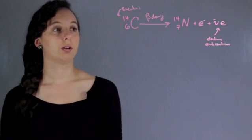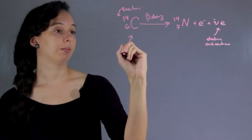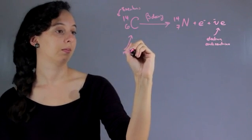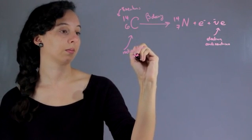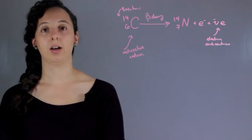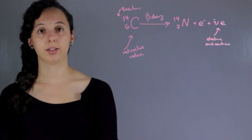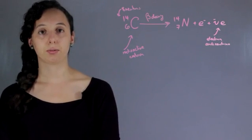So this is your radioactive carbon, nitrogen. And the short answer is that it turns into nitrogen through beta decay.